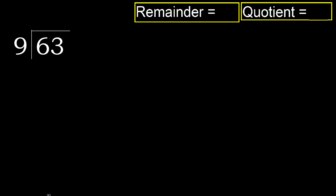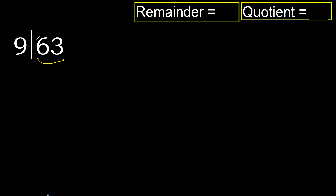63 divided by 9. 6 is less, therefore next. 63 is not less, therefore with 63 and 9 — multiply by which number is nearest to 63.